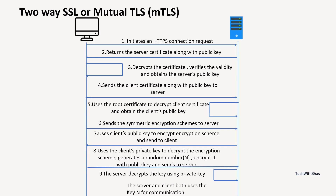This completes the MTLS handshake. The key thing to understand comparing MTLS with one-way TLS is that in one-way TLS only the server was required to send its certificate to the client, but in MTLS both parties need to present certificates to each other. This is the major difference between these two encryption schemes.